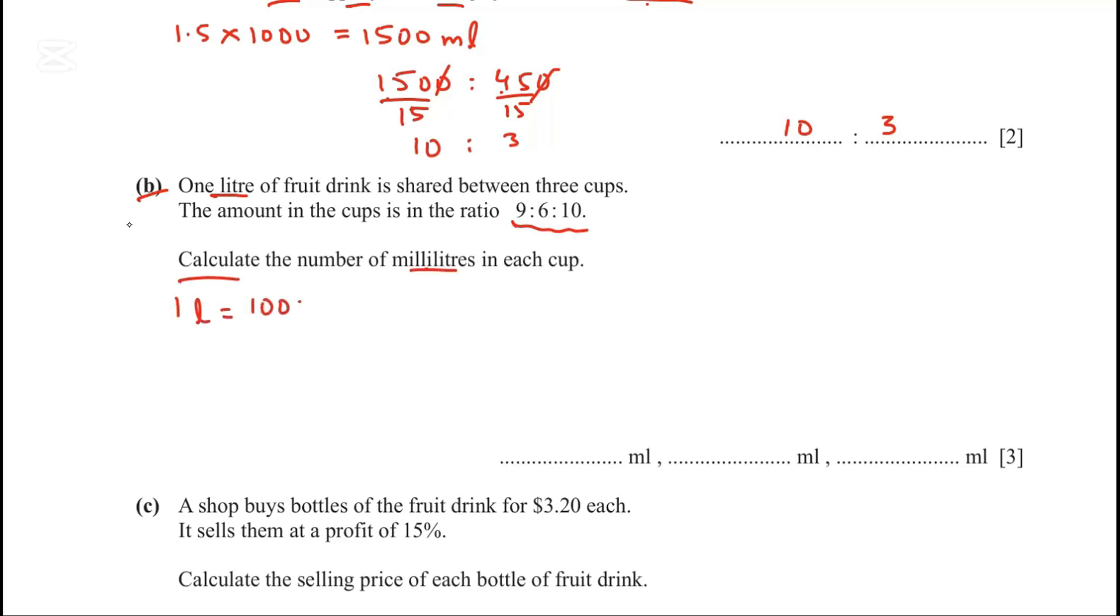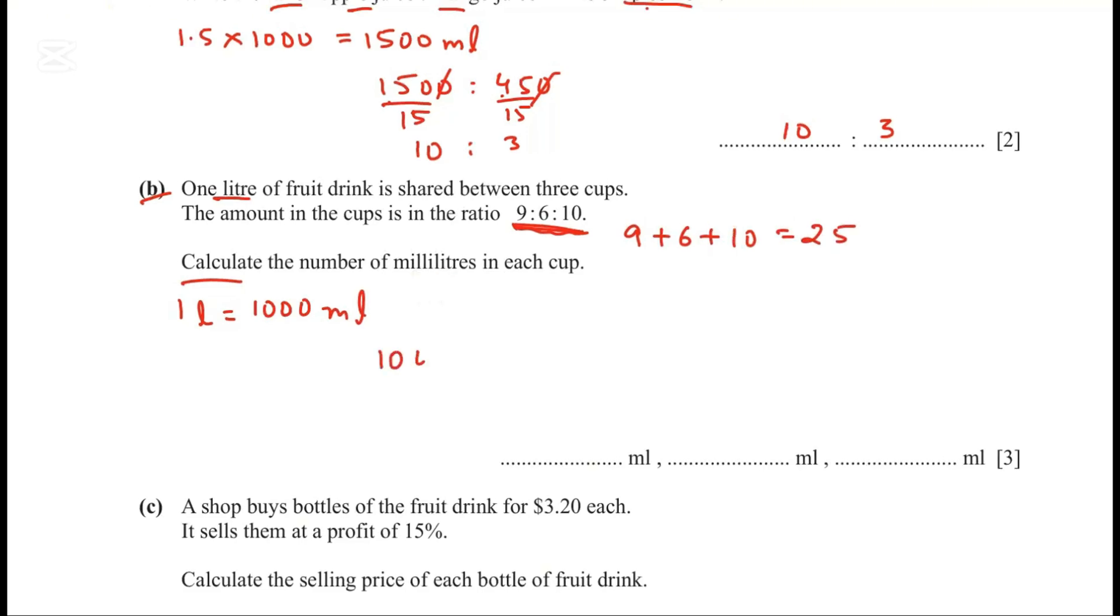So one liter is 1000 milliliters. Let's add the numbers in the ratio: 9 plus 6 plus 10 equals 25. Then divide 1000 by 25, which gives 40. This is one part. So 9 times 40 is 360, 6 times 40 is 240, and 10 times 40 is 400. To verify, 360 plus 240 plus 400 equals 1000.